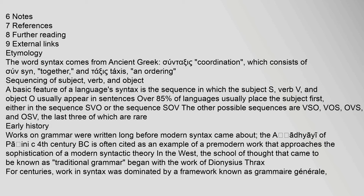Sequencing of subject, verb, and object: A basic feature of a language's syntax is the sequence in which the subject (S), verb (V), and object (O) usually appear in sentences. Over 85% of languages usually place the subject first, either in the sequence SVO or the sequence SOV. The other possible sequences are VSO, VOS, OVS, and OSV, the last three of which are rare.